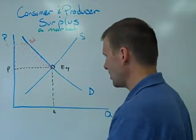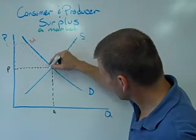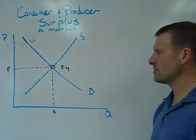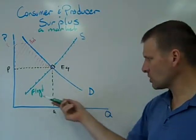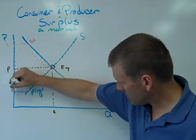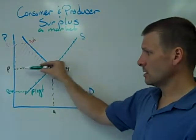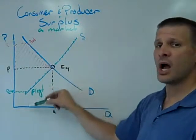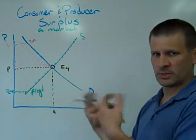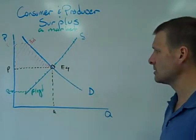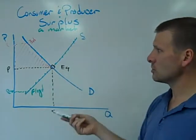Producer surplus is the same thing. Imagine the supply curve full of individual sellers. We'll have somebody down here — let's say Floyd. Floyd's gone to the market bearing a certain amount of costs, and those costs allow him to offer a price of P2 for his goods or services. Instead, he's found the market price going for P, which is much higher than he anticipated. So he's experiencing surplus — some profit as a result of selling his good at a much higher price than expected. Any seller on this lower end of the supply curve will experience producer surplus, and we can shade this area in accordingly.